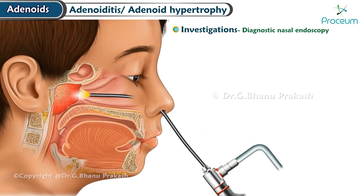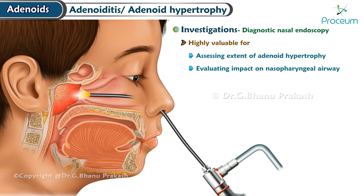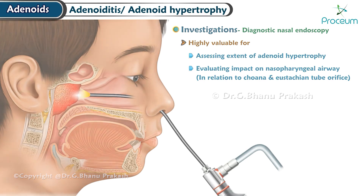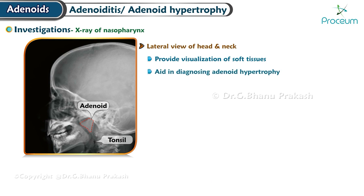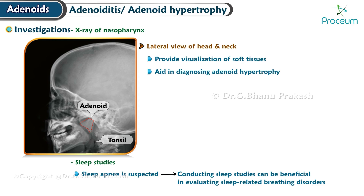Investigations: Diagnostic nasal endoscopy is highly valuable for assessing the extent of adenoid hypertrophy and evaluating the impact on the nasopharyngeal airway, particularly in relation to the choanal openings and the Eustachian tube orifice. X-ray of the nasopharynx — a lateral view of the head and neck — can provide visualization of soft tissues and aid in diagnosis. If sleep apnea is suspected, sleep studies can be beneficial in evaluating sleep-related breathing disorders.